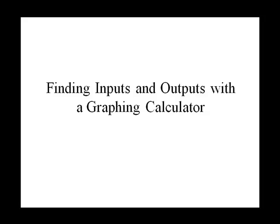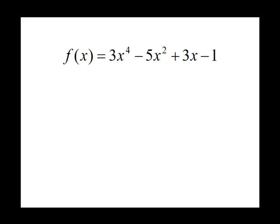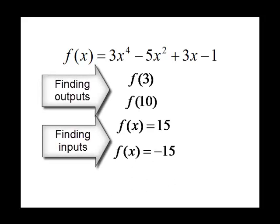In this video, we're going to do a demonstration about finding inputs and outputs with a graphing calculator. We're going to use the function 3x to the 4th minus 5x squared plus 3x minus 1. We need to find f of 3, f of 10, f of x equals 15, and f of x equals negative 15.